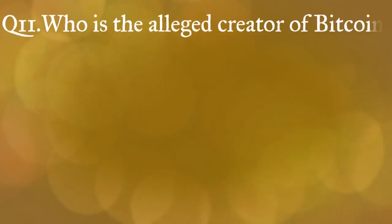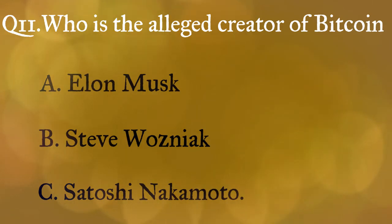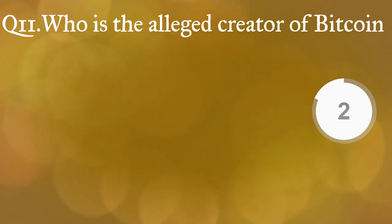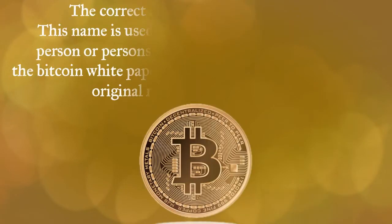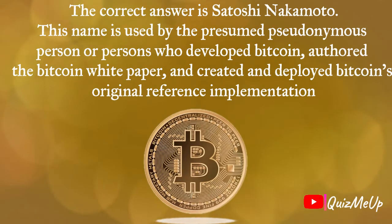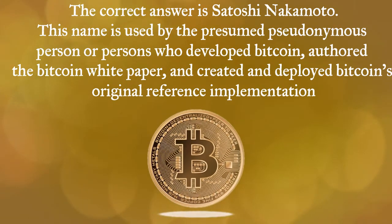Question eleven: who is the alleged creator of Bitcoin? A) Elon Musk, B) Steve Wozniak, C) Satoshi Nakamoto. The correct answer is Satoshi Nakamoto. This name is used by the presumed pseudonymous person or persons who developed Bitcoin, authored the Bitcoin white paper, and created and deployed Bitcoin's original reference implementation.